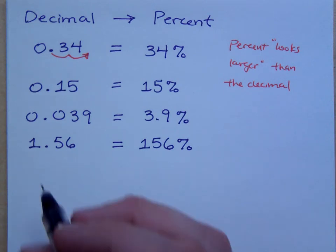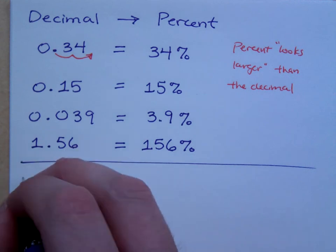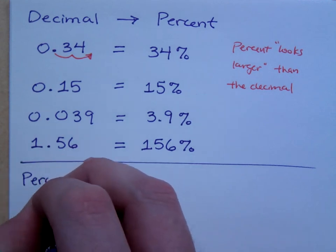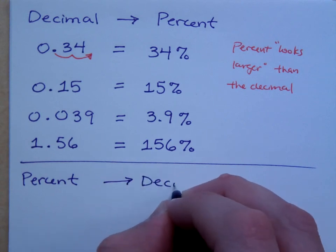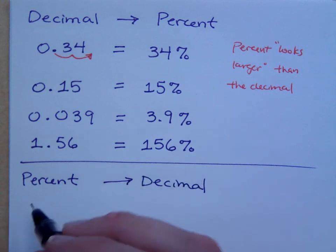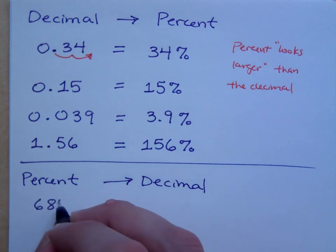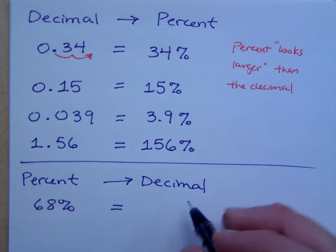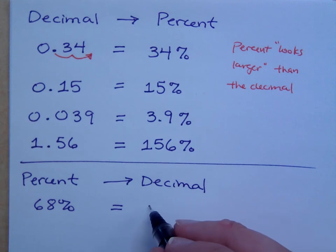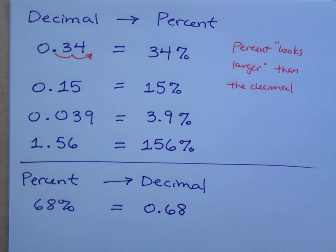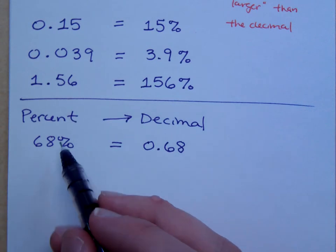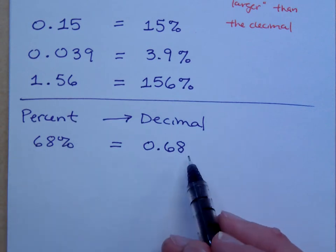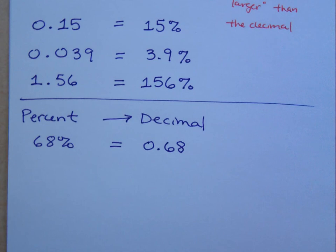Now, just to refresh you. As I go from a percent to a decimal. So 68% is what as a decimal? 0.68, there's no percent there. Remember, the percent is going to look larger than the decimal. The percent carries the percent symbol. The decimal carries the decimal. There's no percent there.